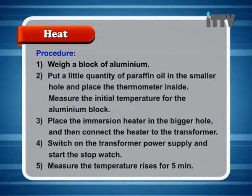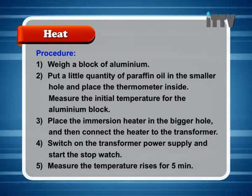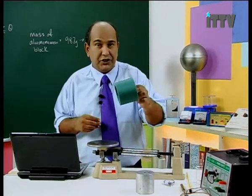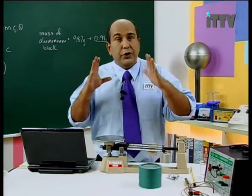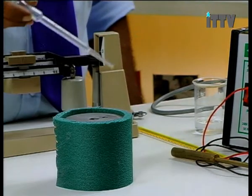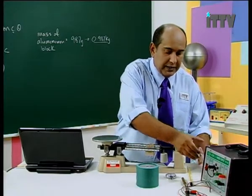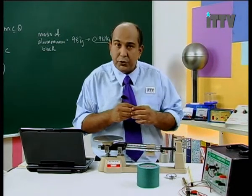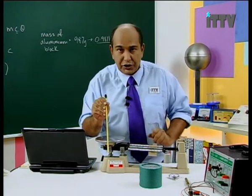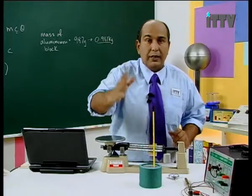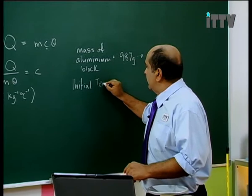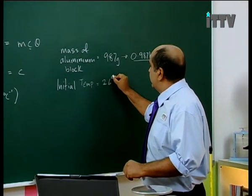Put a little quantity of paraffin oil in the small hole and place the thermometer inside. Let's take the aluminium block and place its insulation jacket around it. The main function is to reduce heat loss to the surroundings so that our experiment is more accurate. We place the paraffin oil in the small hole — the reason is to allow heat conduction to be more efficient into the thermometer. Before inserting the thermometer, I take a quick reading: 26 degrees Celsius. That will be my initial temperature.